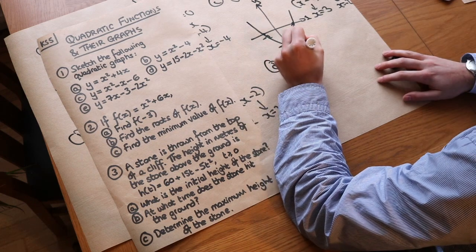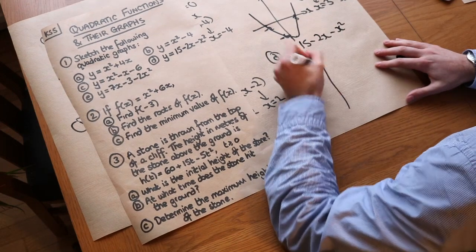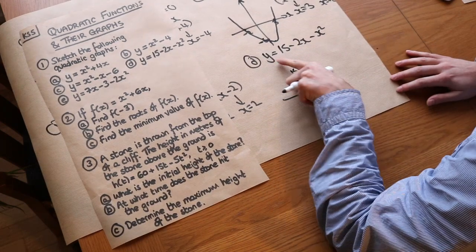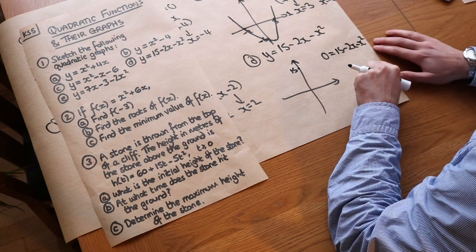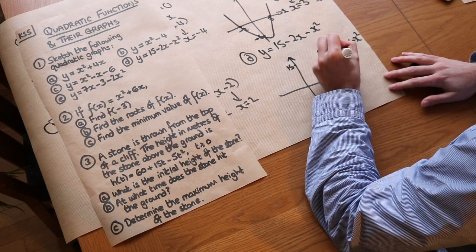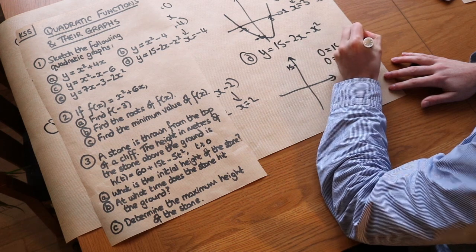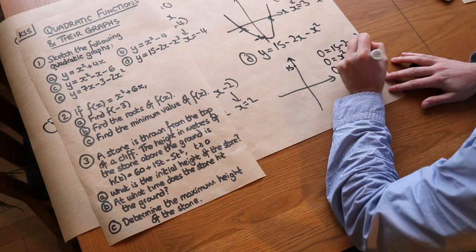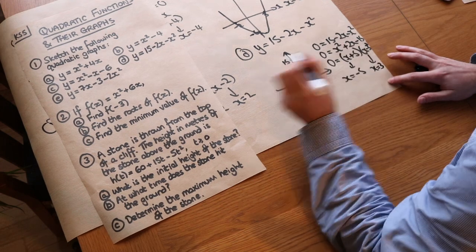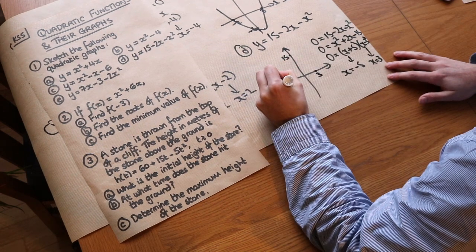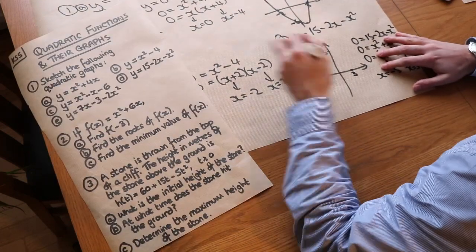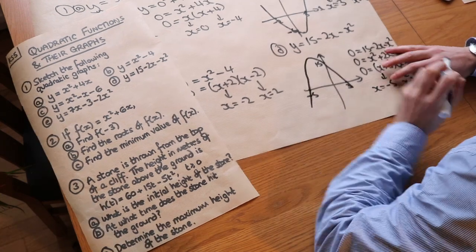For D, y equals 15 minus 2x minus x squared. The y intercept is 15 from the constant term. To find the x intercepts we make y equal to 0, then multiply both sides by minus 1 to make the x squared term positive: x squared plus 2x minus 15 equals 0. Factorising gives (x plus 5)(x minus 3) equals 0, so the two roots are x equals minus 5 and x equals 3. Because there's a negative coefficient in front of the x squared, we get the frowny face shape — an upside-down quadratic.